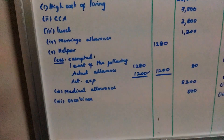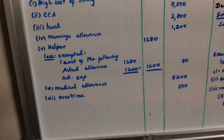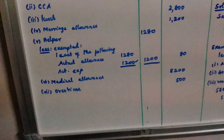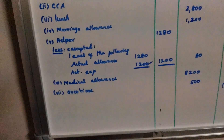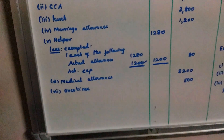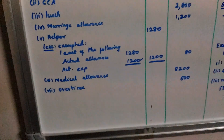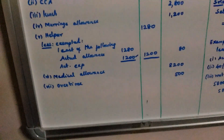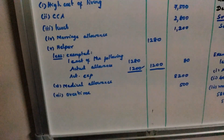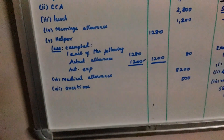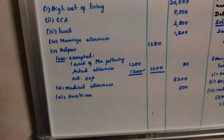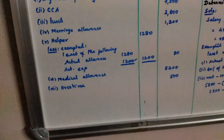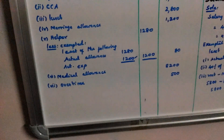Lunch Allowance is fully taxable — $2,800. Marriage Allowance is fully taxable — $1,200. So the four fully taxable allowances are: High Cost of Living, CCA, Lunch, and Marriage Allowances.